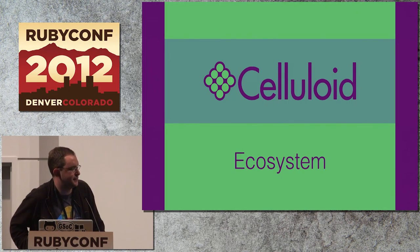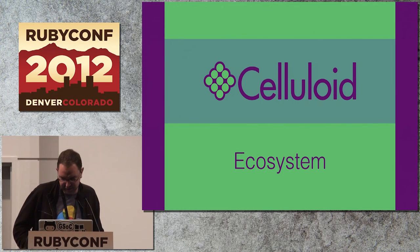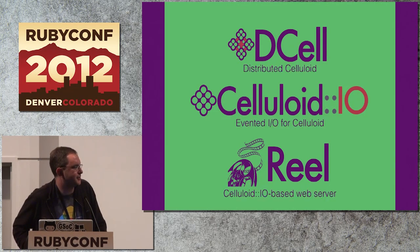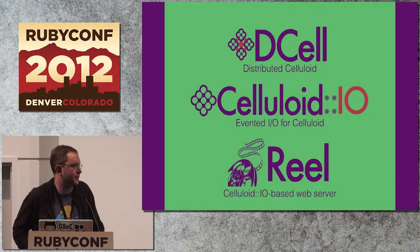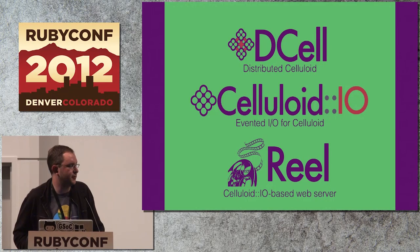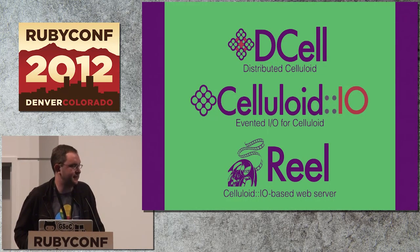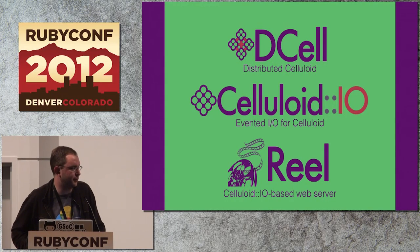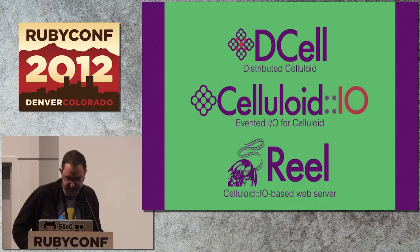This talk is called the Celluloid Ecosystem. I wanted to give you a crash course on Celluloid, but what I actually want to talk about are three Celluloid sub-projects: dCell — distribution across the network, letting several VMs running Celluloid talk to each other; Celluloid IO — an alternative to EventMachine that does evented IO but gets you out of callback hell with a synchronous API; and finally Reel, a web server I've written built on Celluloid IO.